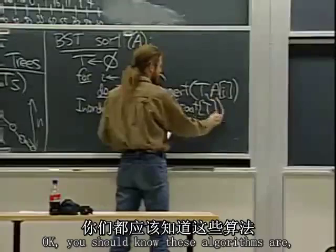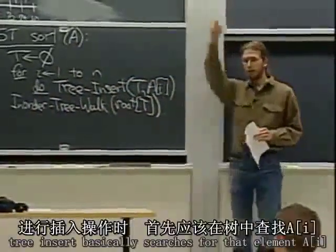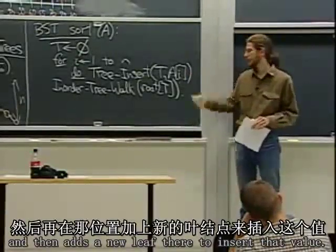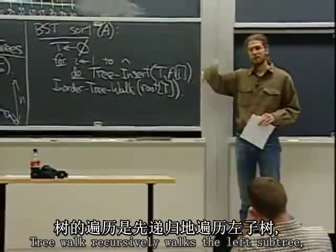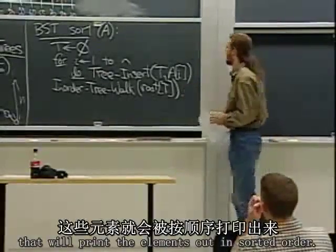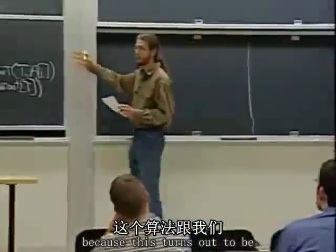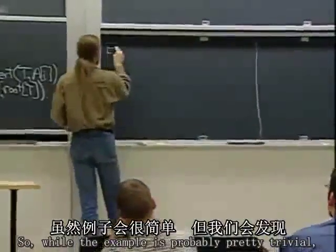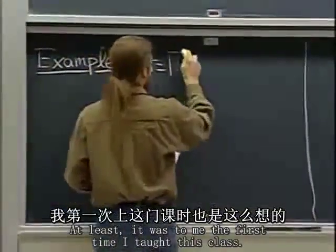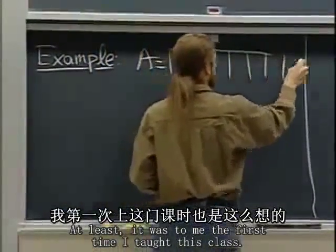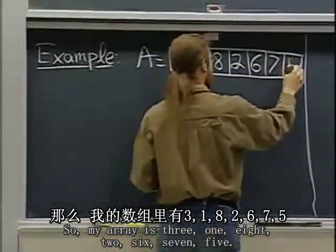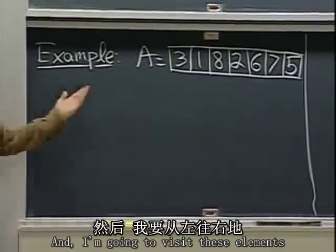Tree insert basically searches for element A[i] until it finds where it should have been, then adds a new leaf there. Tree walk recursively walks the left subtree, prints the root, then recursively walks the right subtree. By the binary search tree property, that will print the elements out in sorted order. So let's do a quick example — this turns out to be related to another sorting algorithm we've seen already. My array is 3, 1, 8, 2, 6, 7, 5. I'm going to visit these elements left to right and build a tree.